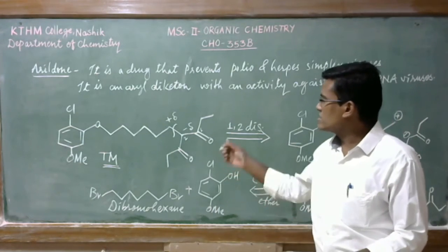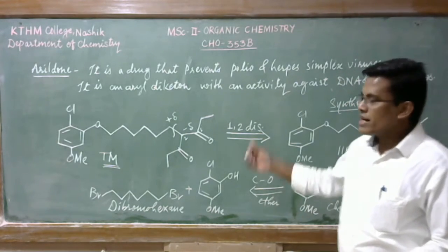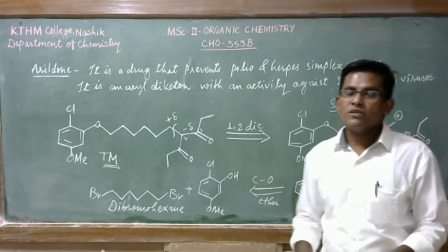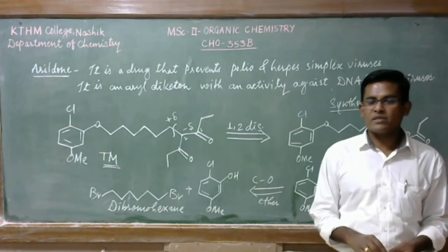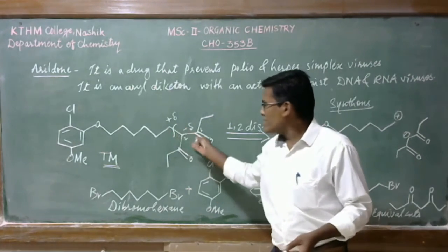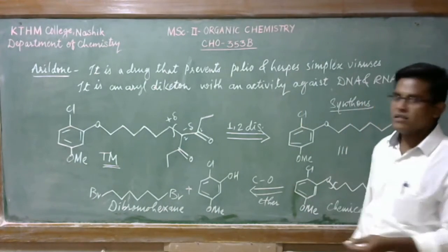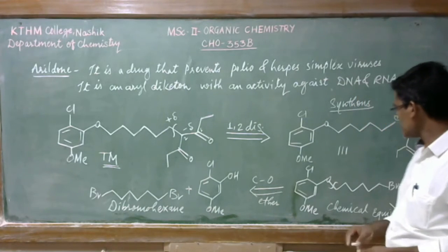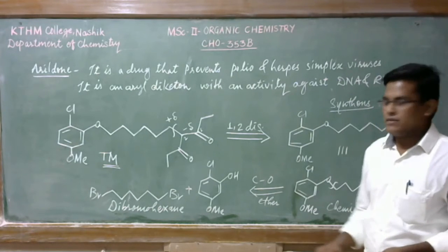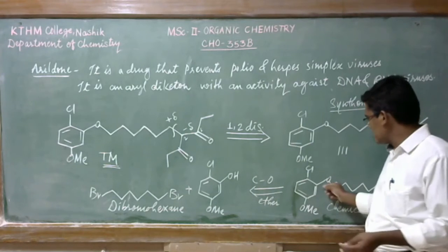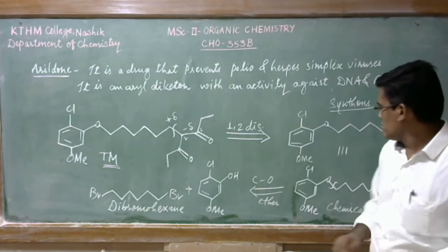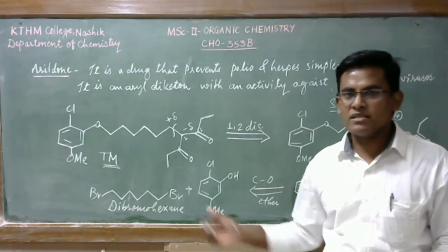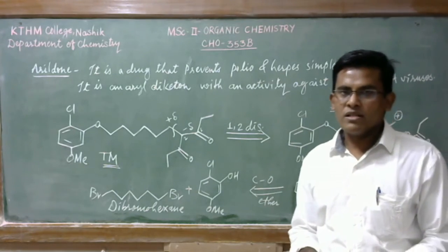This is how we can do the retrosynthetic analysis for this particular arildone. When you look at this molecule, first we see the diketone moiety attached to this alkyl chain — that is the obvious 1,2 disconnection involving enol chemistry. After disconnecting, we get two synthons which are translated to their chemical equivalents. Then after obtaining this substrate, we disconnect the ether linkage to get the two starting materials.